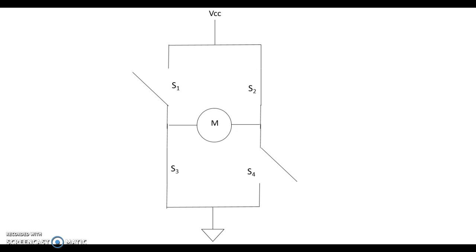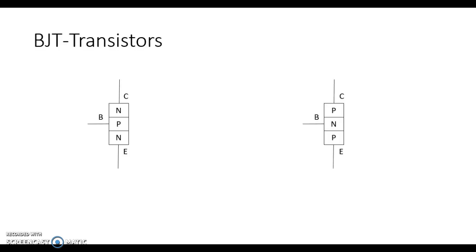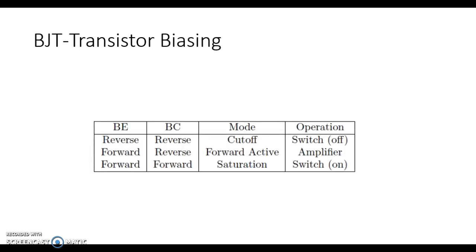We can actually build an H-bridge circuit by using a set of BJT transistors. In this case we need both NPNs and PNPs. These are not standard schematics for BJT transistors — they're more just showing the different junctions — and we're going to need this in order to explain why the circuit actually works.